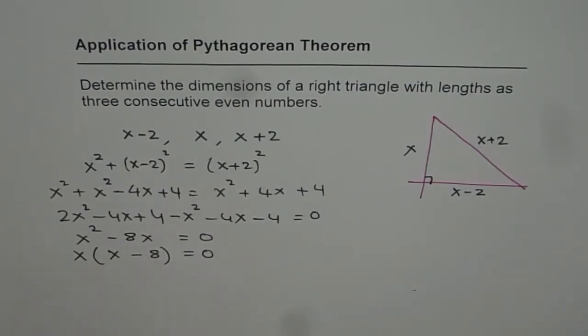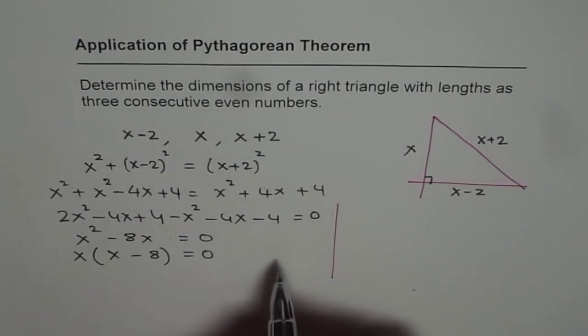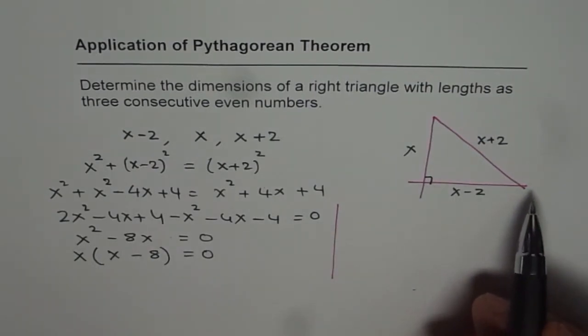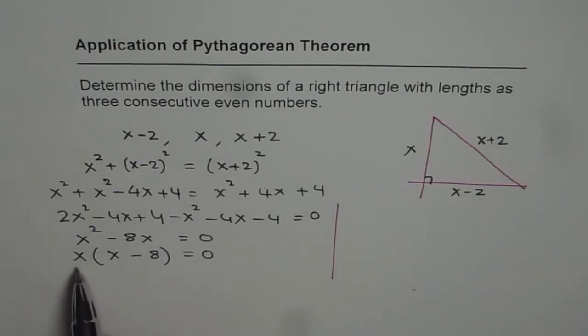Now in the factored form, if we have x times (x minus 8) equals to 0, so what does this imply? This implies that either x is equal to 0 or x is equal to 8. Now x cannot be 0 because we have to have some dimensions nor can x be less than 0, because x minus 2 will make it negative. We cannot have negative sides. So the only valid answer here is x equals to 8.